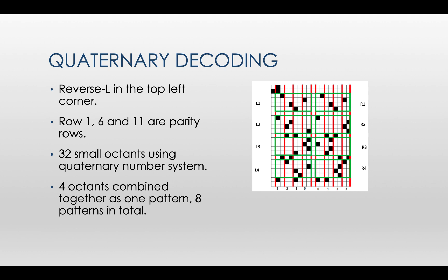Now we take a look at machine identification code using the quaternary system. This kind of yellow dots is easy to recognize since there is a reverse L in the top left corner. Rows 1, 6, and 11 are parity rows which store nothing. From the picture I show on the right, after division, we can see there are in total 32 small octants. Every 4 octants combined together records a quaternary number.